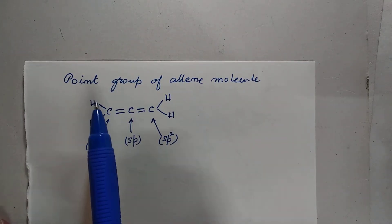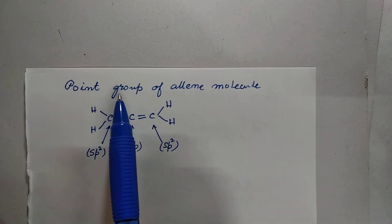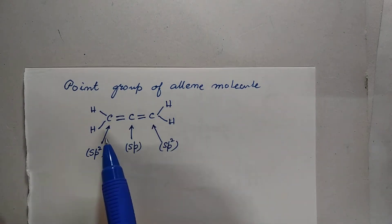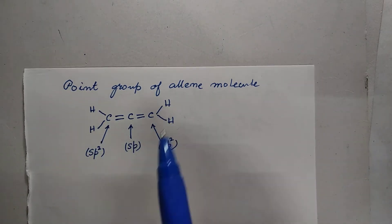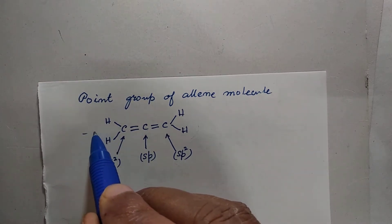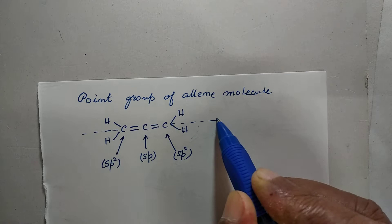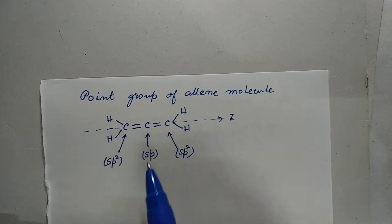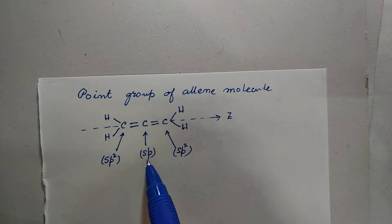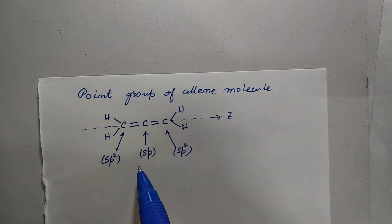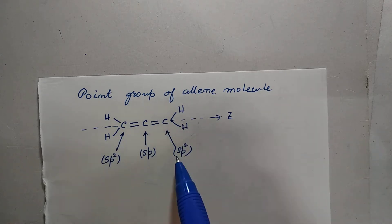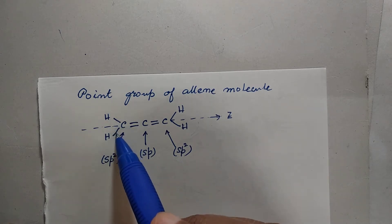In this video, I will discuss the point group of the allene molecule. The molecule has a structure where three carbon atoms are in the same line — let this be the Z axis. The central carbon atom must be sp hybridized so that it can form sigma bonds on two sides using the sp hybrid orbitals. The terminal carbon atoms are sp2 hybridized because these bond angles are 120 degrees.